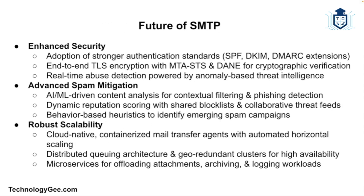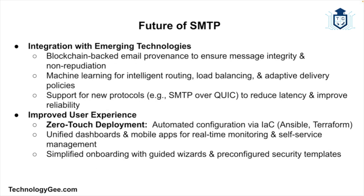With all that said, let's talk about the future of SMTP. SMTP has evolved significantly since its inception and continues to adapt to changing email communication. Key areas of focus include: enhanced security with continued improvements in authentication, encryption, and anti-abuse measures; advances in spam detection and filtering; scalability to handle increased email traffic volumes while maintaining performance; integration with new technologies such as blockchain for email authenticity and machine learning for intelligent email processing; and enhancements in user experience around ease of configuration and management.